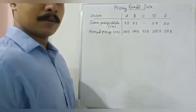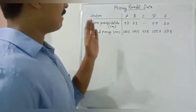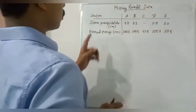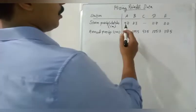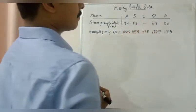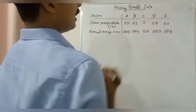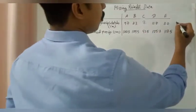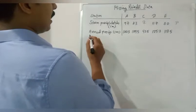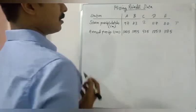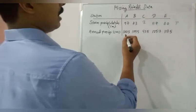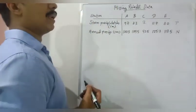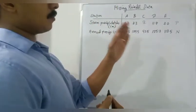Welcome back. Today our topic is missing rainfall data. We have a question: there are five stations A, B, C, D, E and we have storm precipitation values 9.7, 8.3, C value is missing (that is the missing rainfall data), 11.7, 8.0. These storm precipitation values are denoted by capital P. There are another set of values: annual precipitation data in centimeters. We have all five values and this annual precipitation value is denoted by capital letter N.